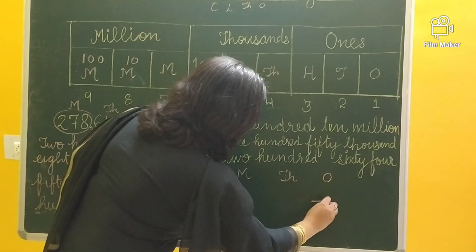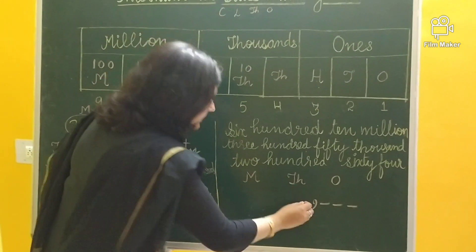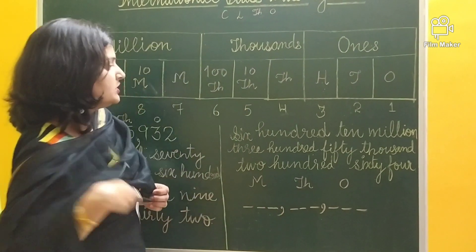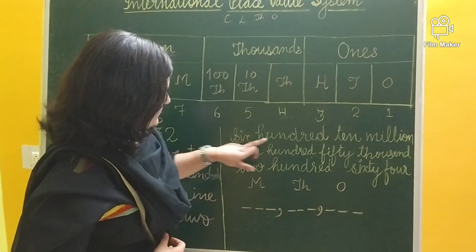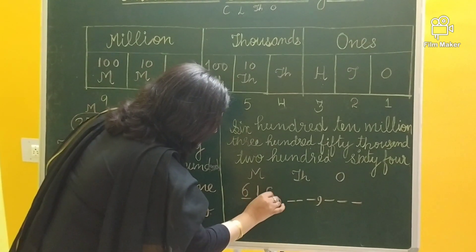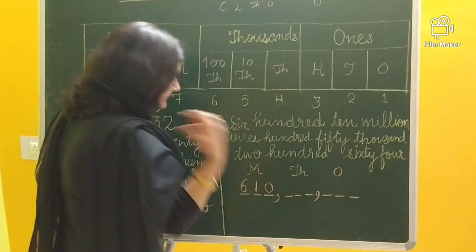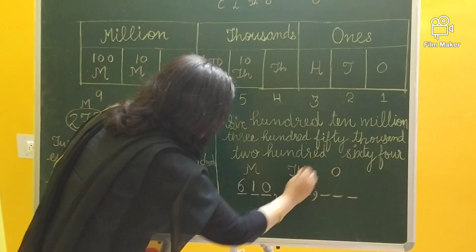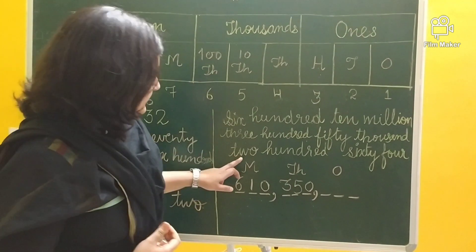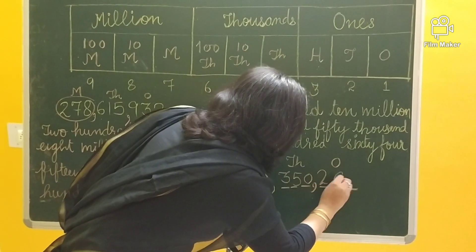In the ones period we have 3 different places — you can refer to the chart. In the thousands period, again 3 different places. And in the millions period, again 3 different places. Now we fill in the blanks: 610 goes into the millions period, 350 goes into the thousands period, and 264 goes into the ones period.